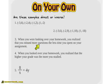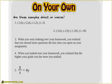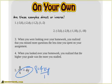When you're looking at some real life examples, when you looked over your homework, you realized that you missed more questions the less time you spent on your assignment. Is that inverse or direct? Whereas this one, when you looked over your homework, you realized that the higher your grade was, the more you studied. And let's look at this one. 8 over x equals 4 over y. I'll give you a hint. It has to do with cross-multiplying and dividing. 8 equals 4 times y. You can divide by 4 there, divide by 4 there. Those cancel, and you get 2 equals xy. You can tell me which one that is now.